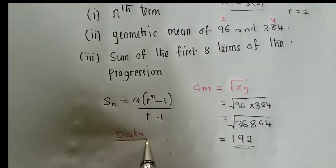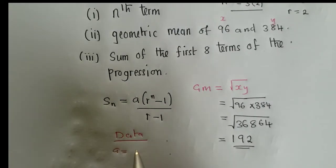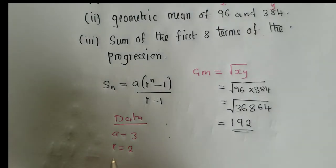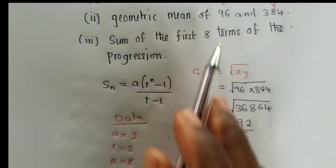We need to know our a. Our a in this case is a 3. Our r is a 2. We found this. And also our n is 8, the 8 from what we've been asked.